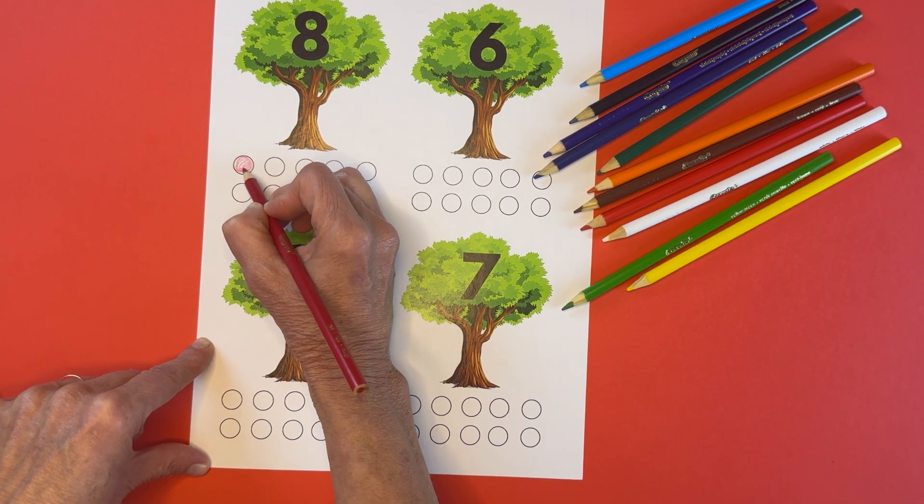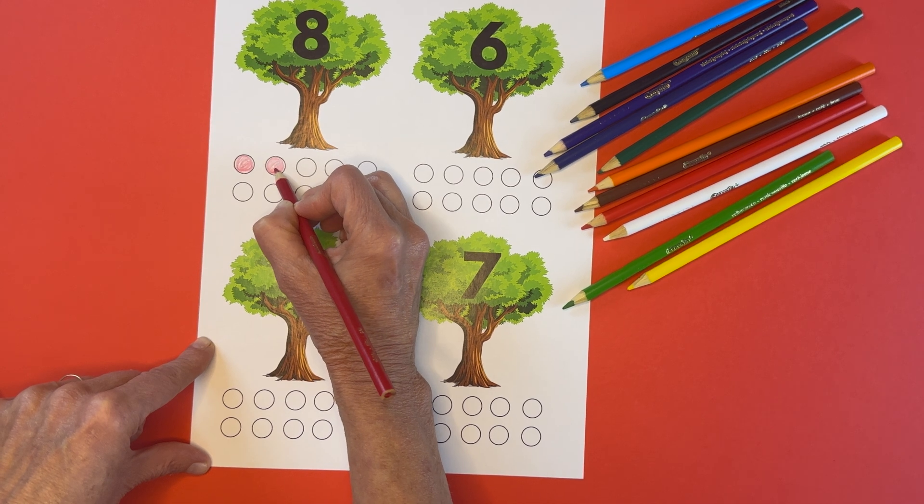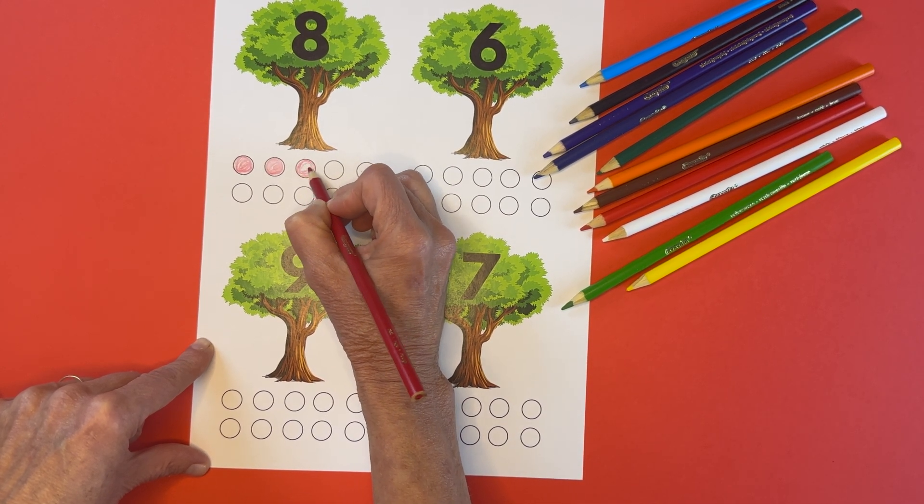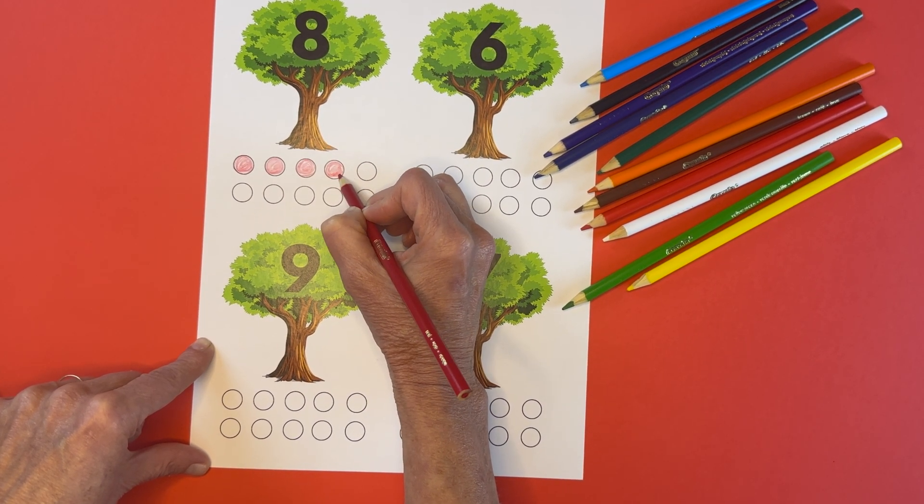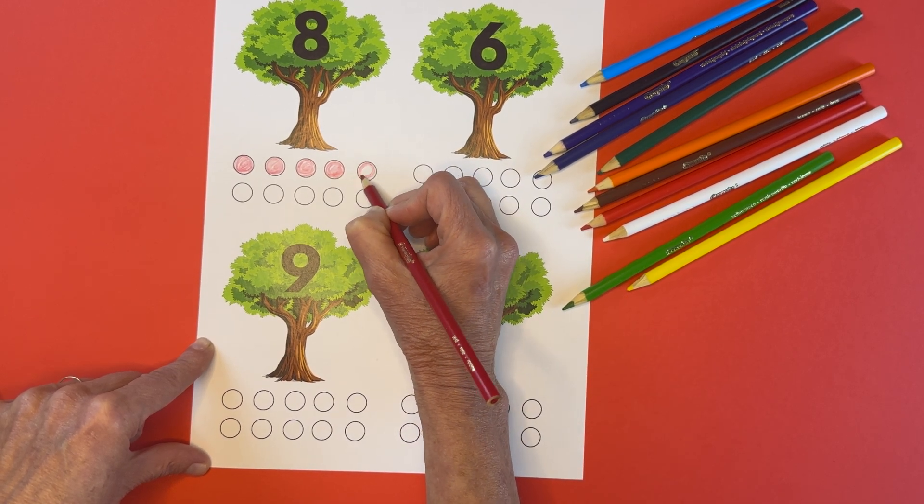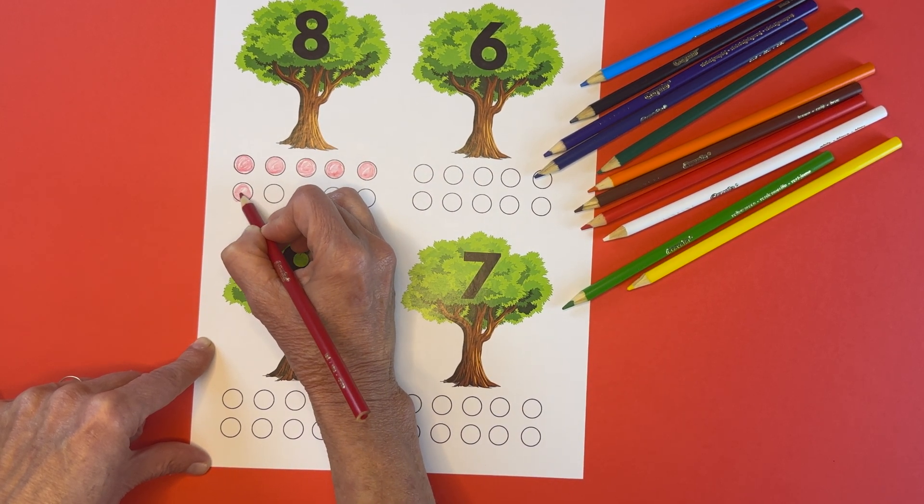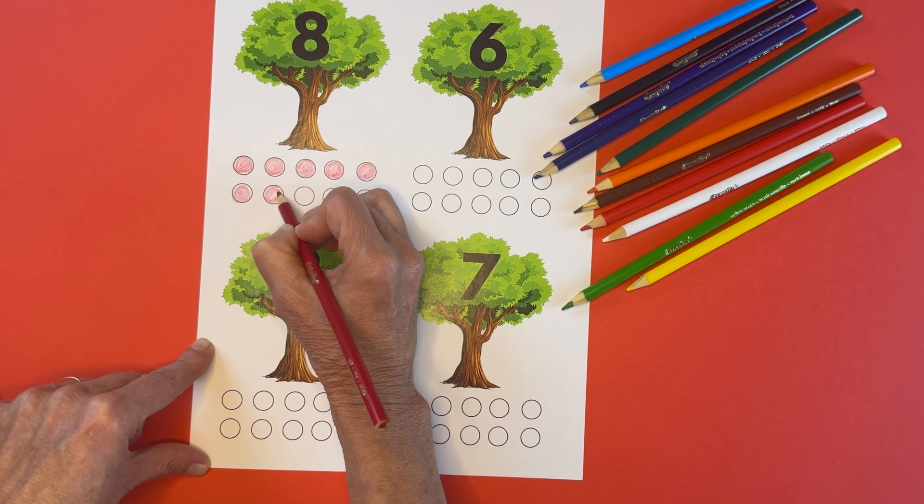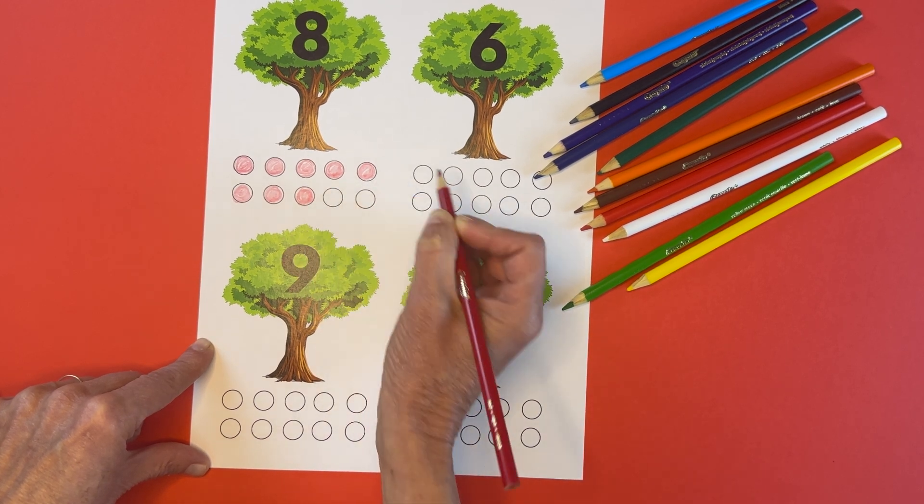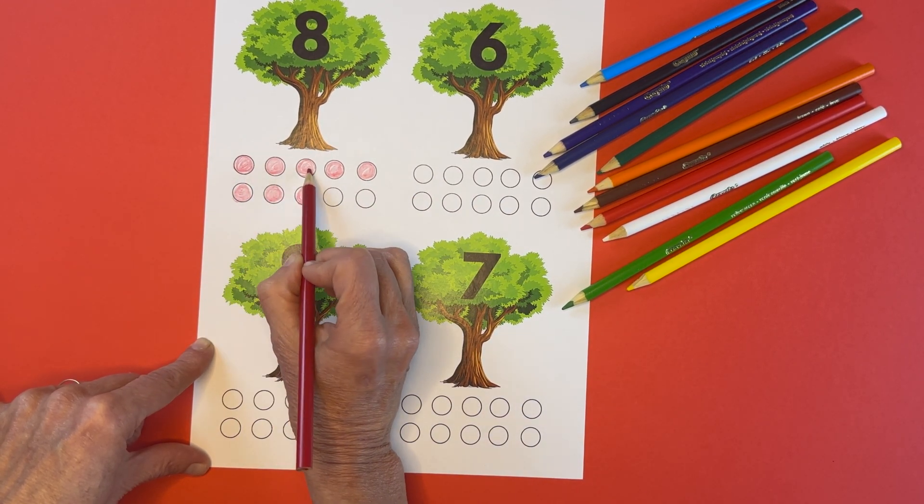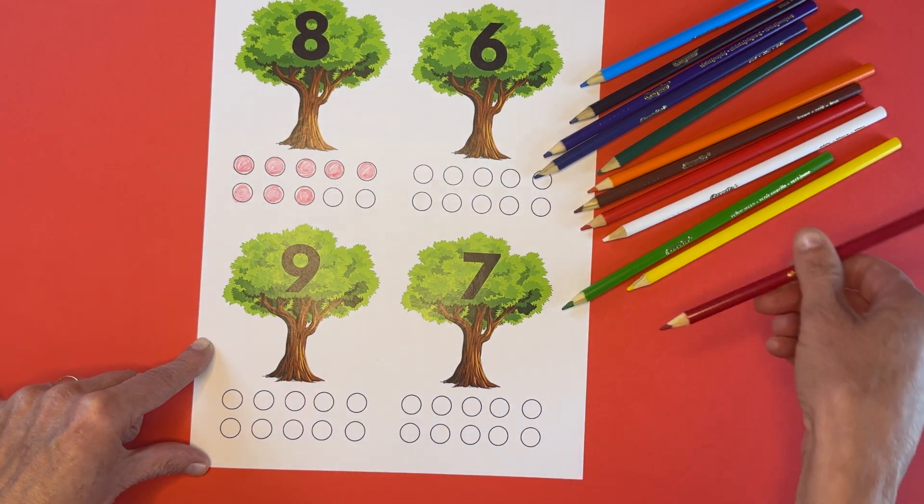One, two, three, four. It comes after four. That's right. Five, six, seven, and eight. Yay. We did it. Let's count. Make sure we got all of them. One, two, three, four, five, six, seven, eight red apples under the number eight apple tree.